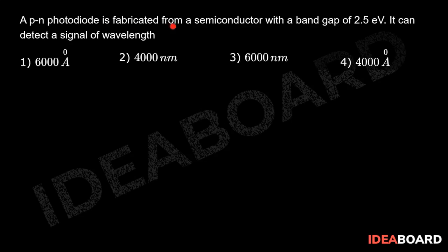A p-n photodiode is fabricated from a semiconductor with a band gap of 2.5 electron volts. It can detect a signal of wavelength. The photodiode can detect a wavelength if the wavelength has sufficient energy equal to its band gap, so that the electron from the valence band can jump into the conduction band and the signal can be detected.